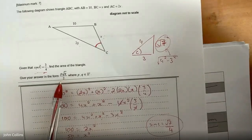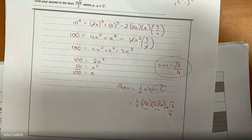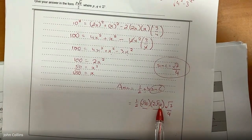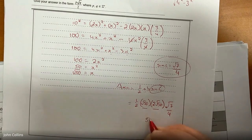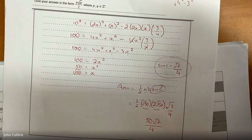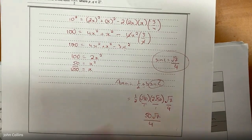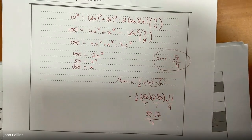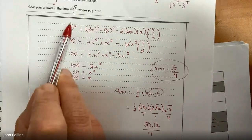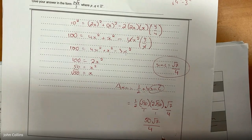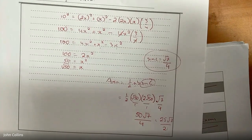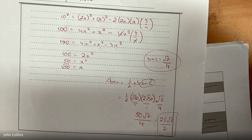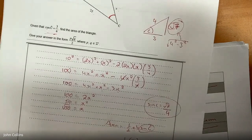Let's manipulate this down to get it in square root form. It's 50 root 7 all divided by 4. I can tidy this up because they want 2 in the denominator — divide everything by 2 — so it's 25 root 7 over 2. So the answer is 25√7 over 2.